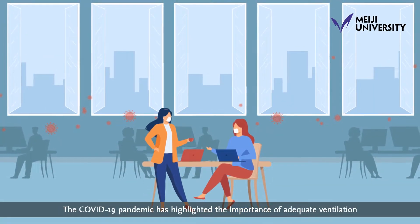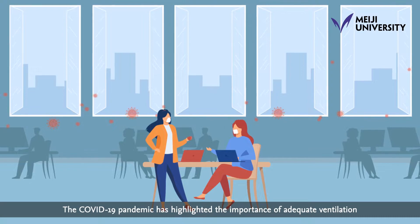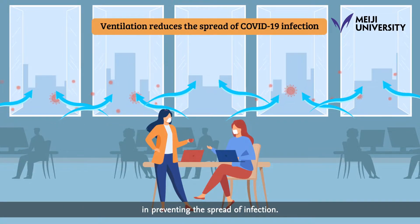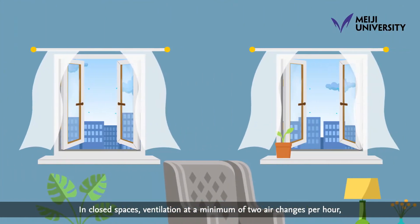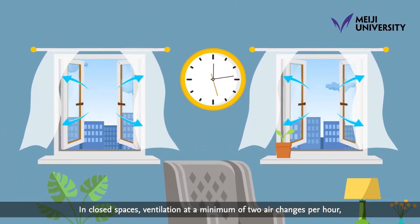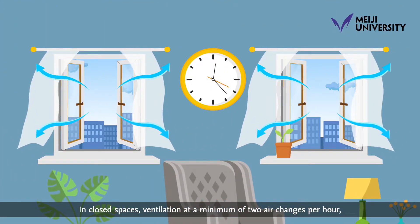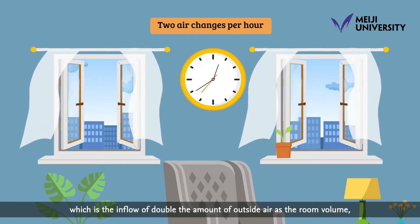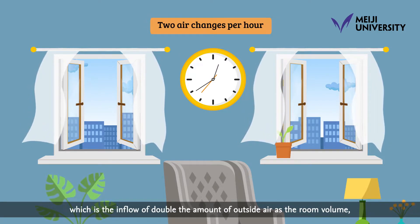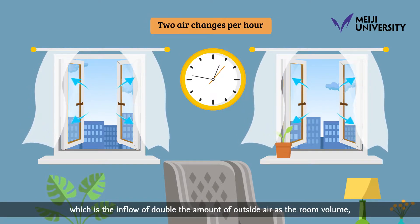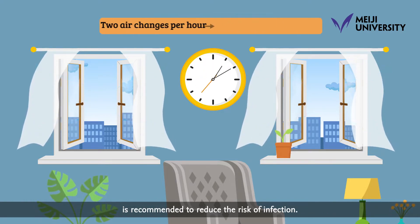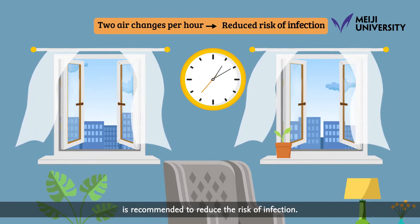The COVID-19 pandemic has highlighted the importance of adequate ventilation in preventing the spread of infection. In closed spaces, ventilation at a minimum of two air changes per hour, which is the inflow of double the amount of outside air as the room volume, is recommended to reduce the risk of infection.